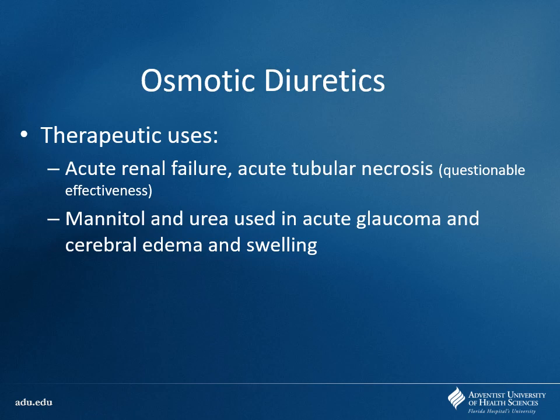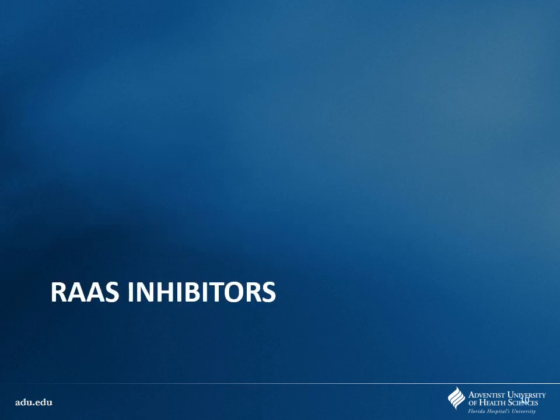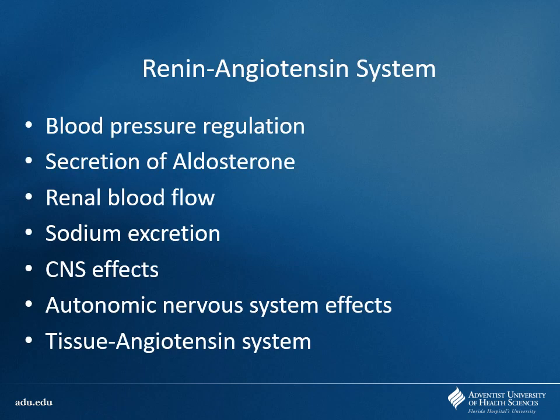That wraps up the diuretics. Now we move into mainstay antihypertensive medications: the RAS inhibitors. RAS stands for renin-angiotensin-aldosterone system. What does the renin-angiotensin system do? It regulates blood pressure — typically by increasing it.